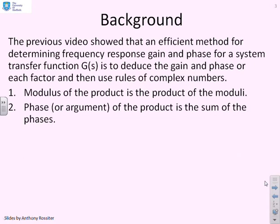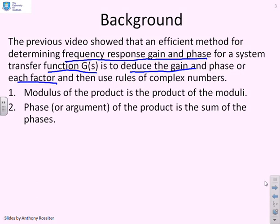In the previous video we showed an efficient method for determining frequency response gain and phase for a system transfer function, assuming that transfer function could be factorised. Essentially what you did is you wrote down the gain and phase for each factor separately, then used the rules of complex numbers: the modulus of the product is the product of the moduli, and the phase of the product is the sum of the phases.